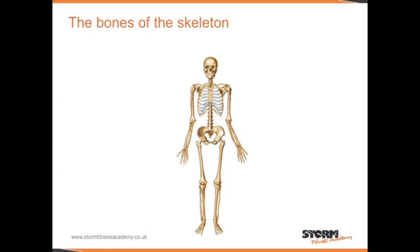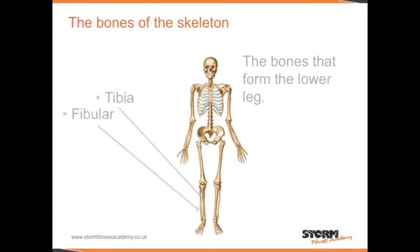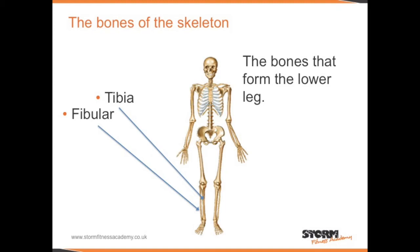There are 206 bones in the human body, but you don't have to learn all 206. The bones that form the lower leg are the tibia and the fibula. The tibia is the one at the front — the shin bone.